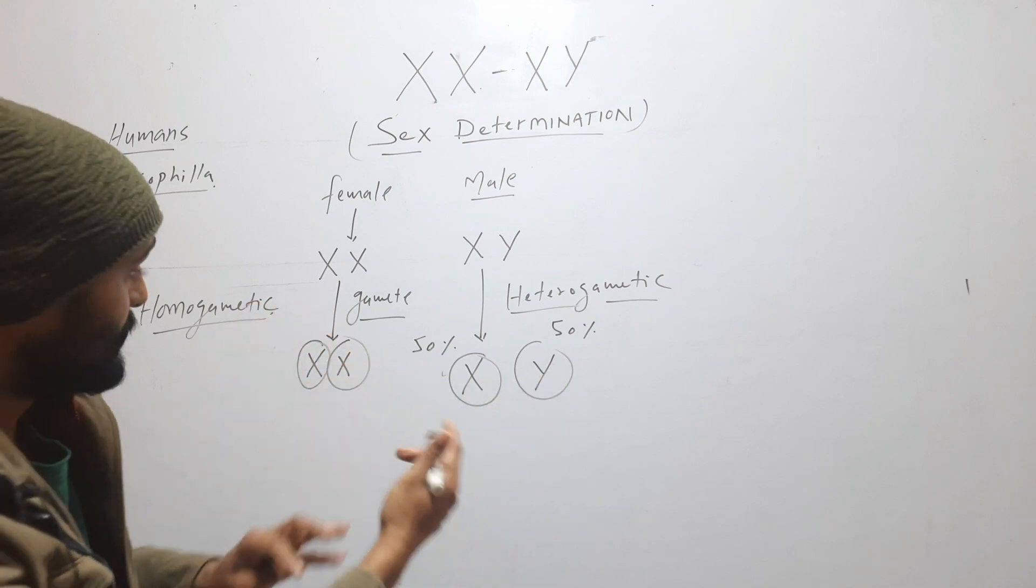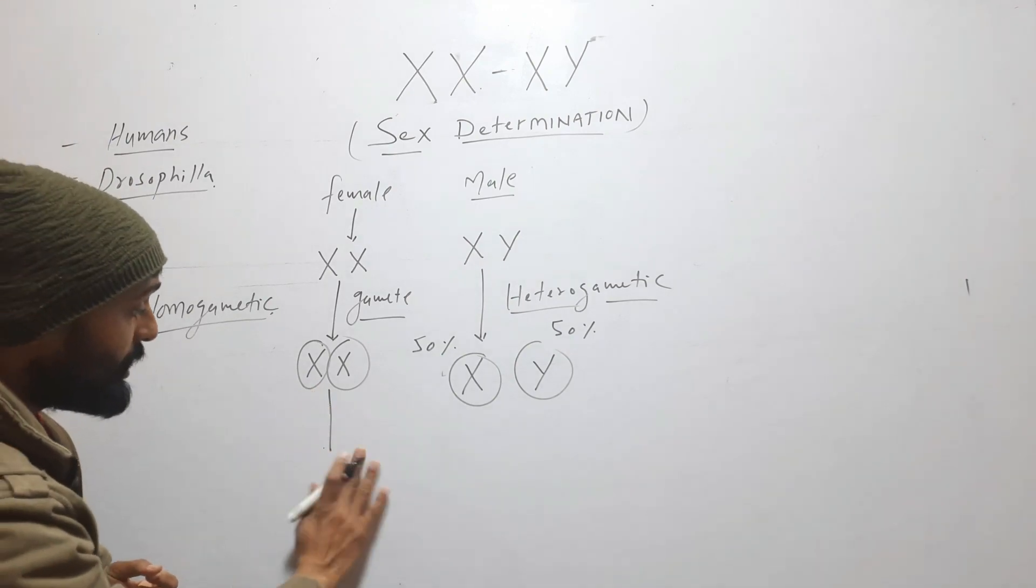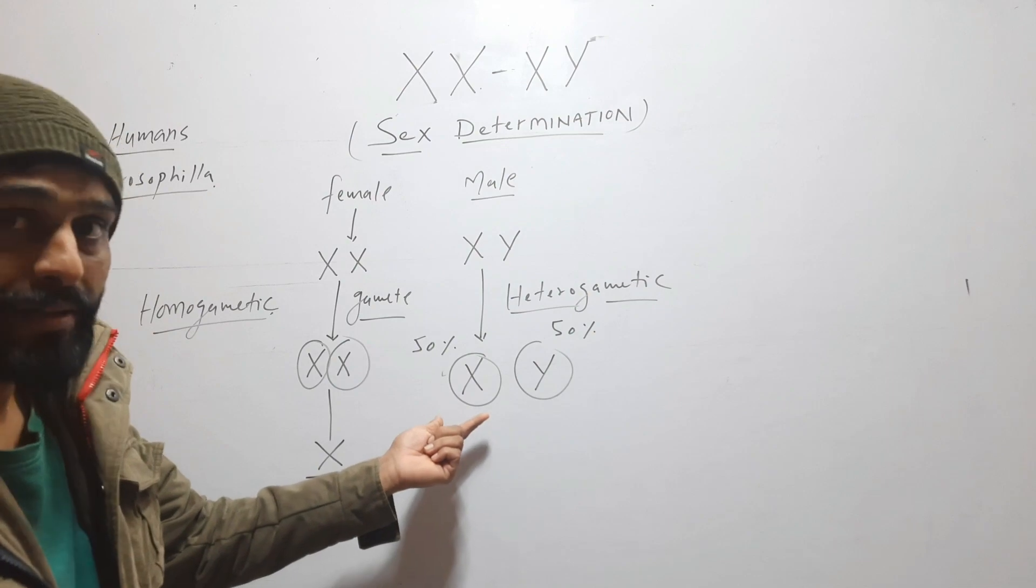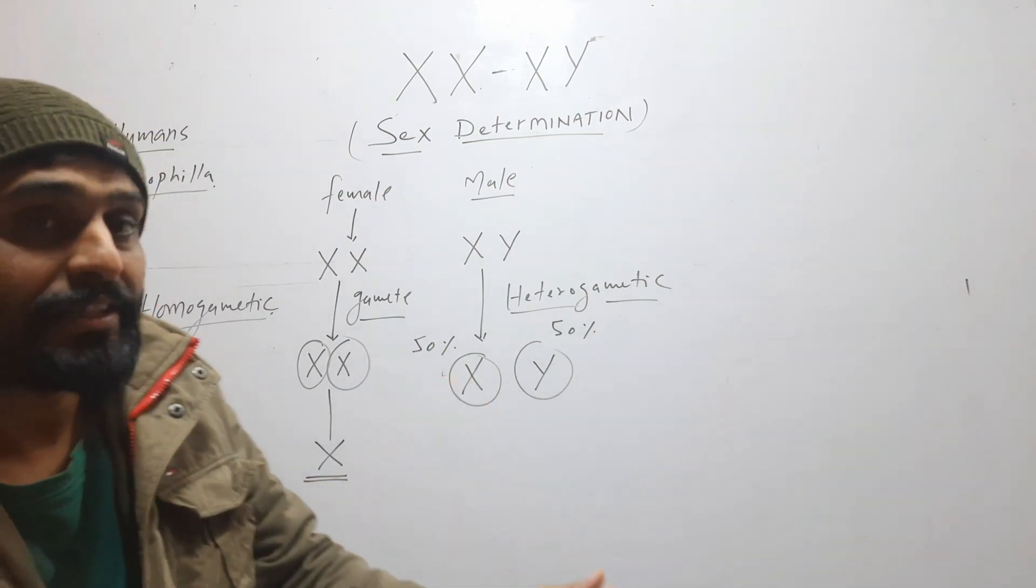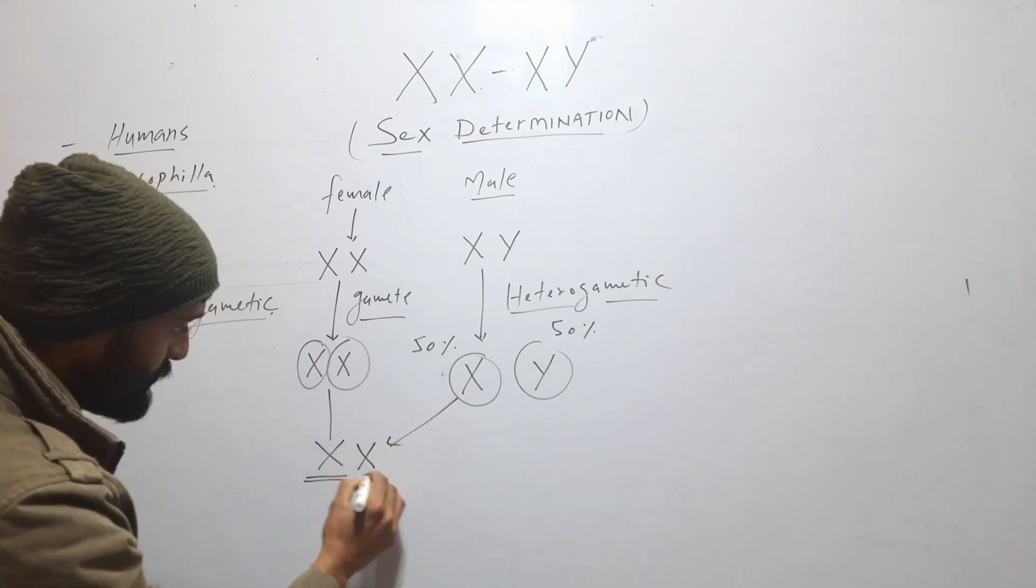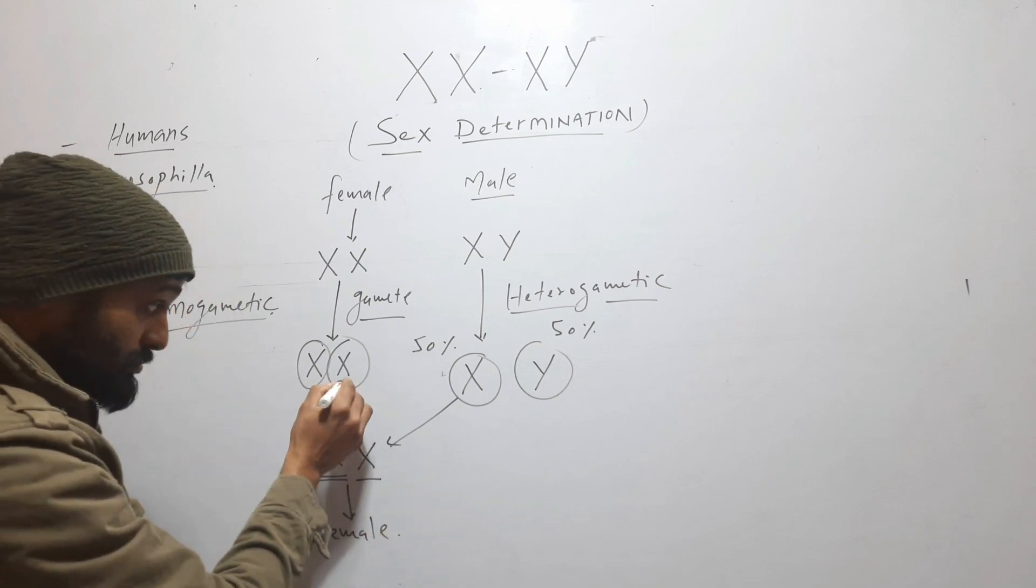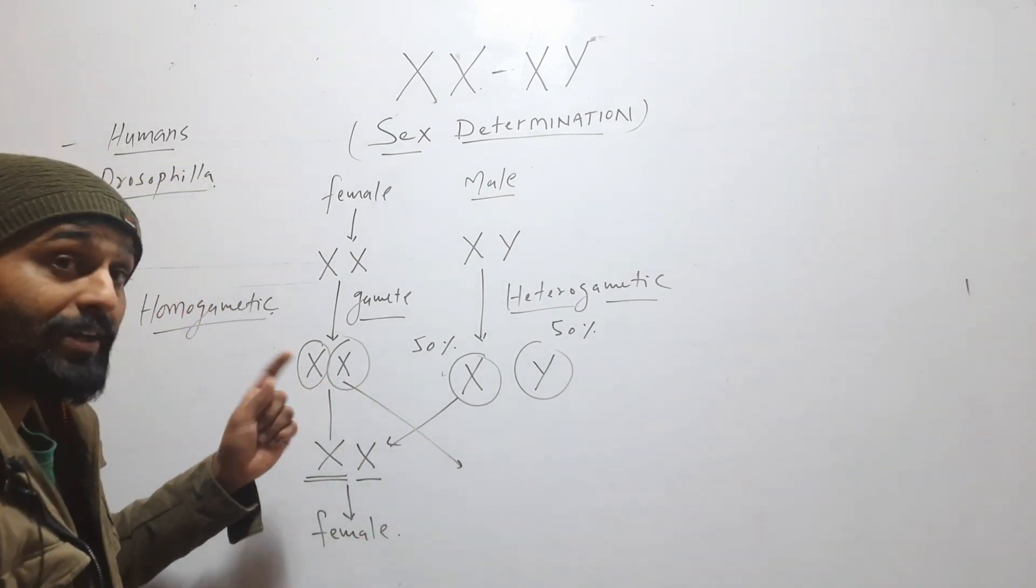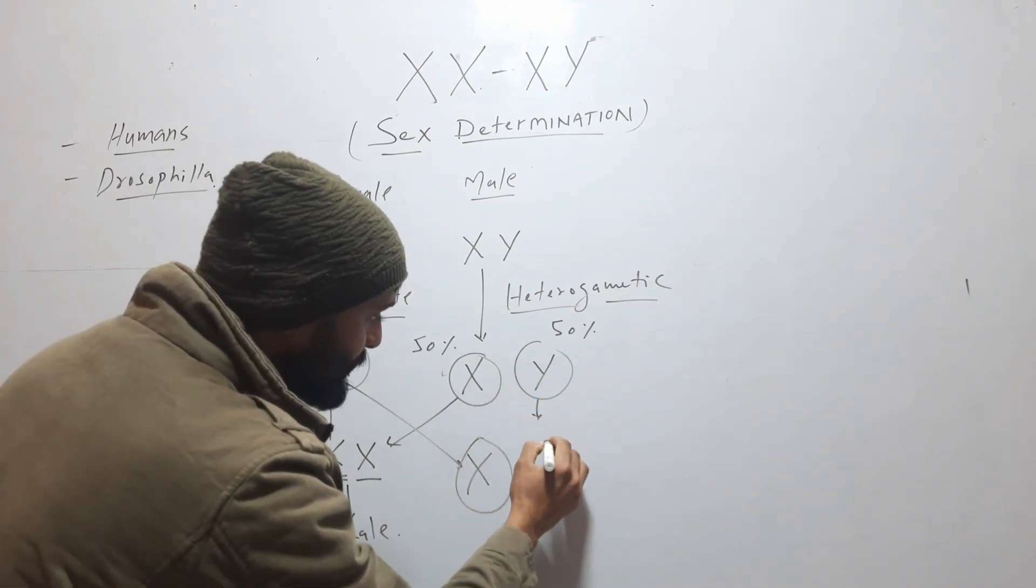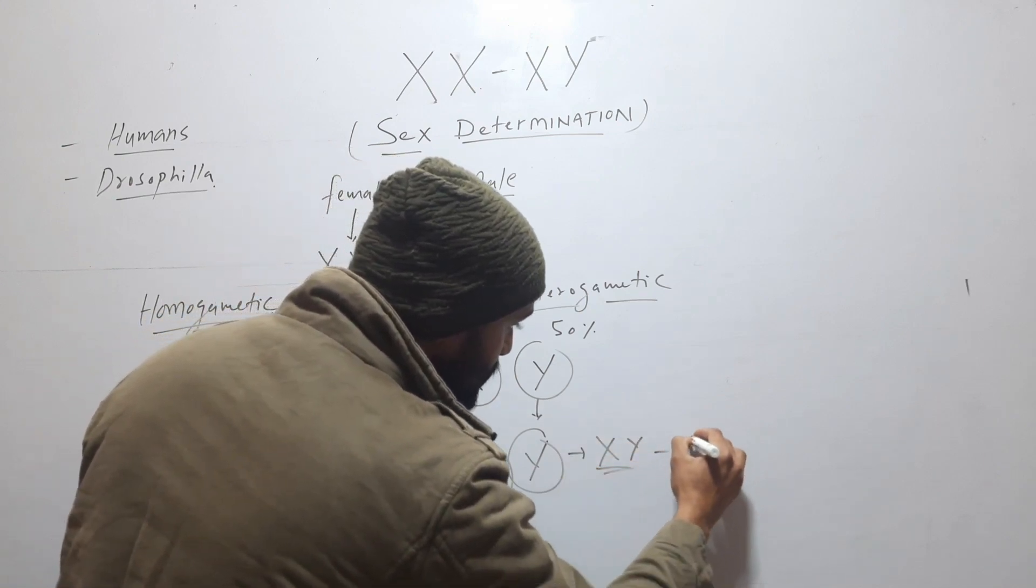So when there is mating between male and female, the female will always give X chromosome. But male, 50% will give X. So if it is X from male, then it will be female. And we know that female will always give X. And when Y comes from male, then it will be XY, and it will be male.